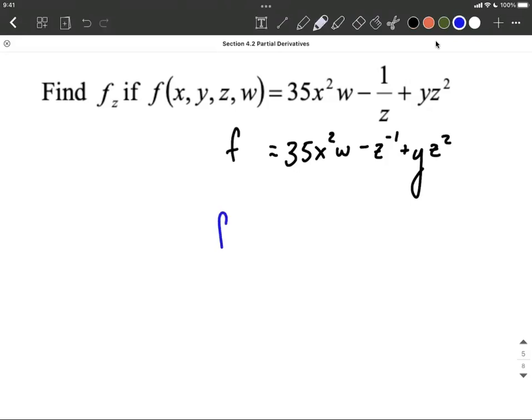Now our partial derivative with respect to z, we go one term at a time here. As we look at this first term, 35x squared w, there aren't any z's there. So we're treating that as though it's a constant. And we all know the derivative of any constant is going to be 0.